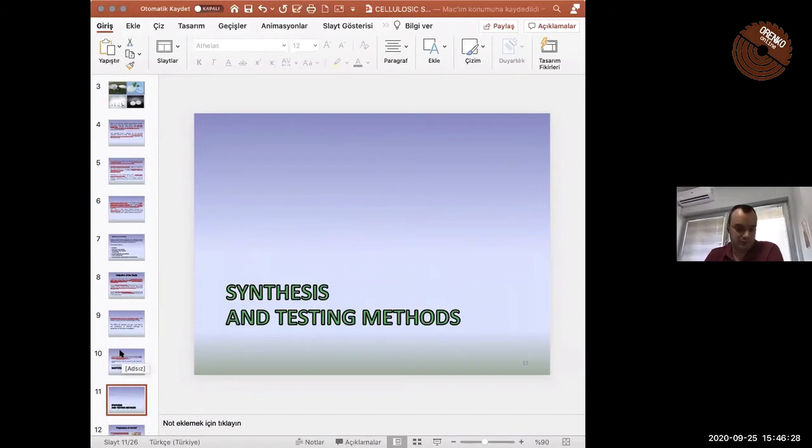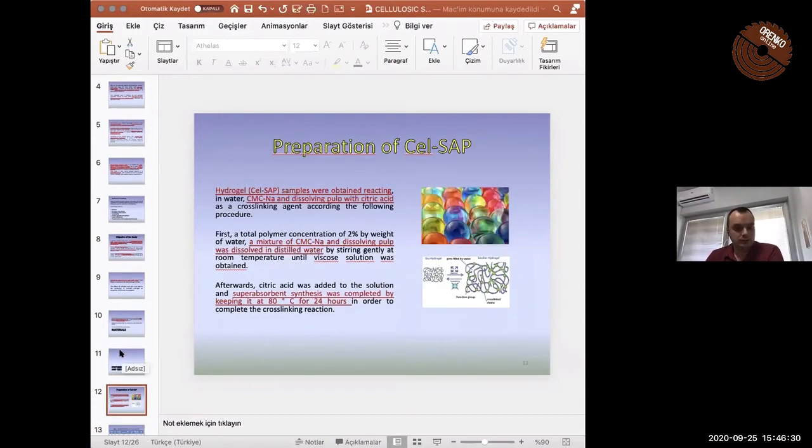Firstly, we start in water. We prepared a mixture of carboxymethyl cellulose, salt, and dissolving pulp at room temperature until obtaining a viscose solution. Then, superabsorbent synthesis was completed by addition of cross-linking agent and by keeping at 80 degrees Celsius for 24 hours.